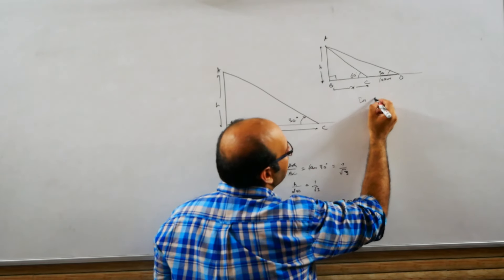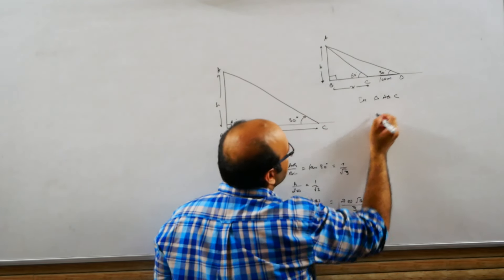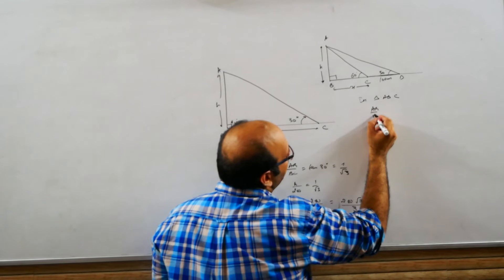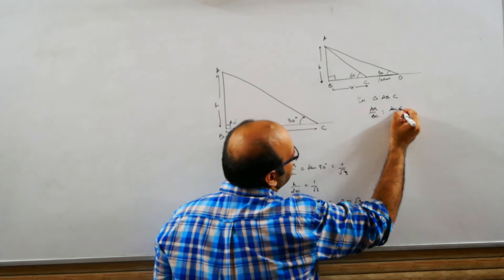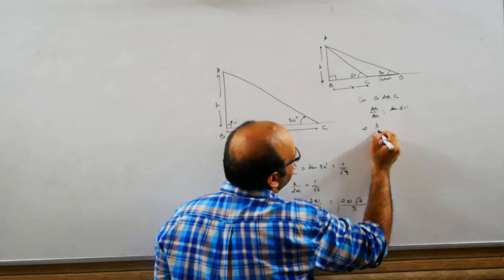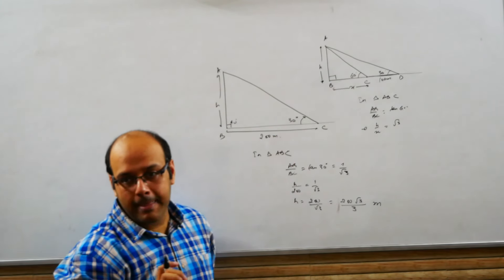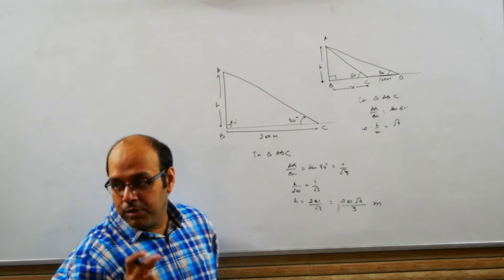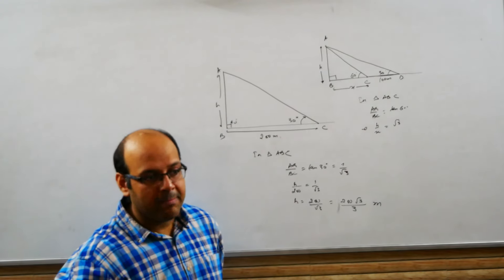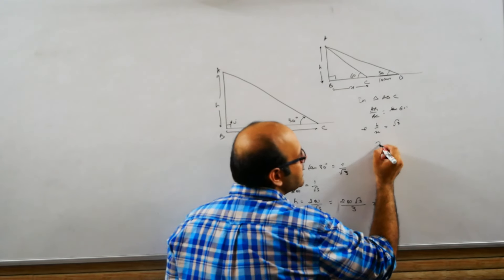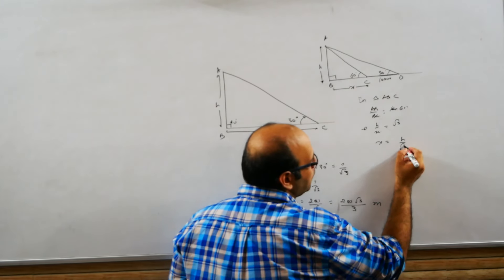How? First, in the right angle triangle which is ABC, between H and X what trigonometric relation is there? What is it? Tan 60 degrees. So I will say in triangle ABC, AB upon BC equals tan 60. That means H upon X is root 3. What do I need to find? I need to find H. So eliminate X. How? X's value is H upon root 3.